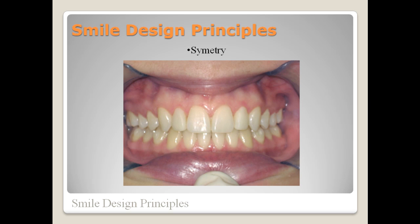Symmetry is important in order to create an aesthetically pleasing smile. The teeth basically need to appear as symmetrical as possible with respect to the midline of the face. You also want to be symmetrical or parallel to the interpupillary line. And if there is some asymmetry in the face, try to have the smile parallel to the horizontal plane.